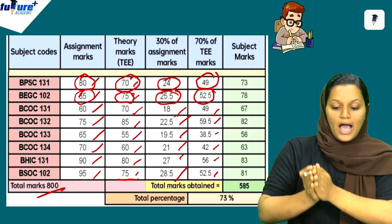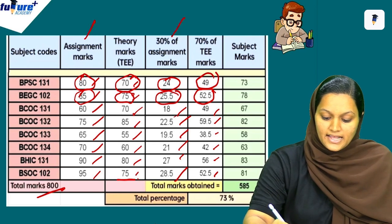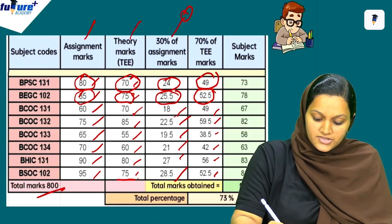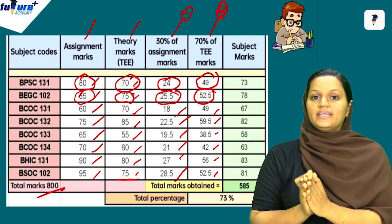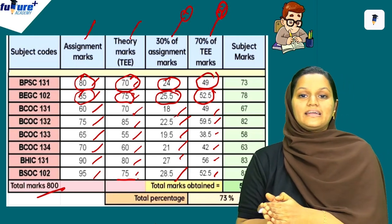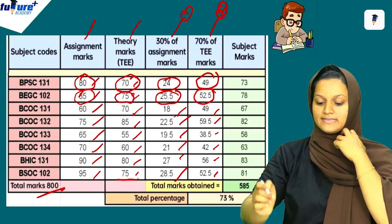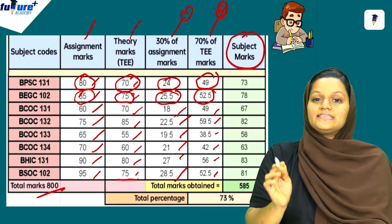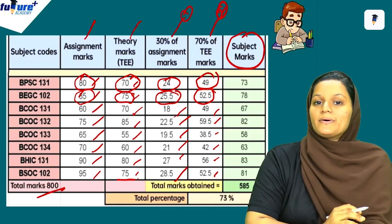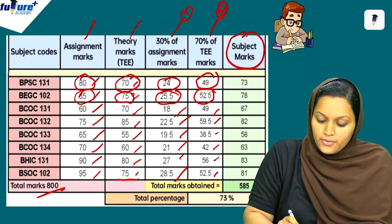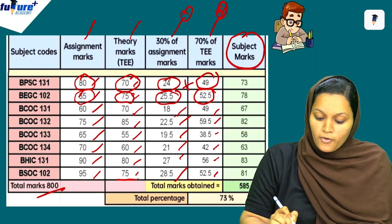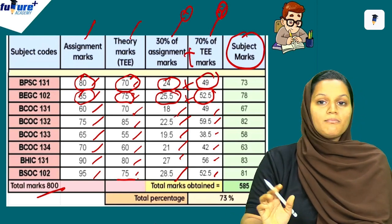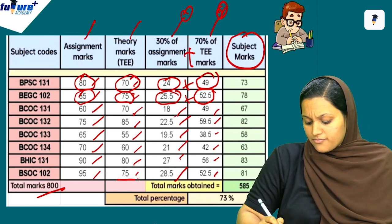Now, what do we do? We have 30% assignment score, then the theory mark with 70%. We have calculated both. The total mark and total percentage gives us the subject mark. So, 30% of assignment mark plus 70% of TEE theory examination mark — for example, 24 plus 49, and 25.5 plus 52.5. You can add these two marks to get the total marks. Adding all totals gives 585.